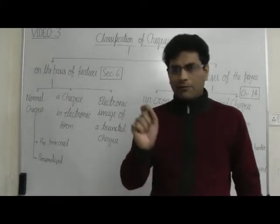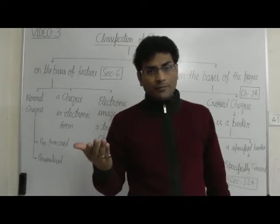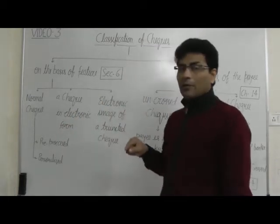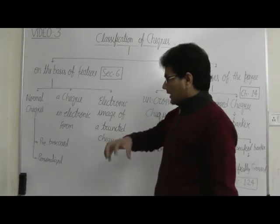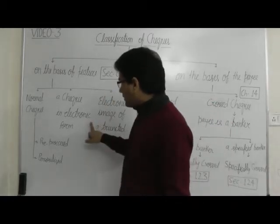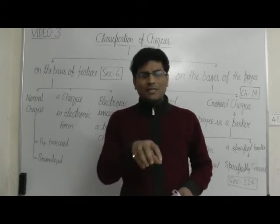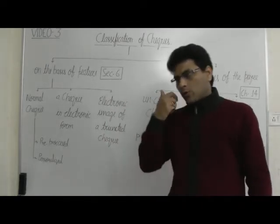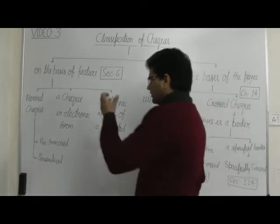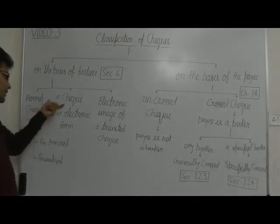For example, if I have issued a check in favour of Mr. X, and X has deposited and presented the check at the bank where he has an account, the account holder's bank scans the check and makes it an electronic image. That electronic image is the electronic form of the check. So the scanned electronic copy of a normal check is a check in electronic form, sent to the clearing house to make the clearing process faster.